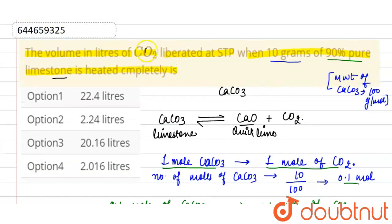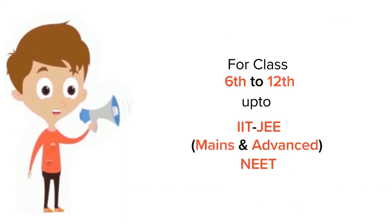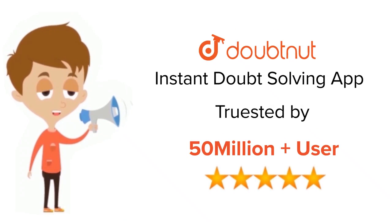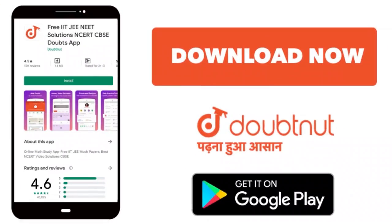So the volume occupied by carbon dioxide gas is 2.016 liters. Option 4 is correct. Thank you. For class 6 to 12, IIT-JEE and NEET level, trusted by more than 5 crore students, download Doubtnut app today.